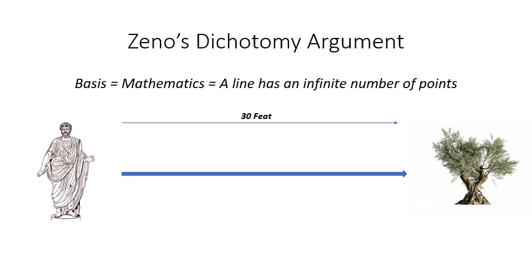Now before he can traverse the 30 feet, he would first have to get halfway there, right? So he would first have to traverse 15 feet. But in order to get to 15 feet, he would have to travel halfway there, 7.5 feet. And in order for him to get to 7.5 feet, he would need to traverse first to 3.75 feet.